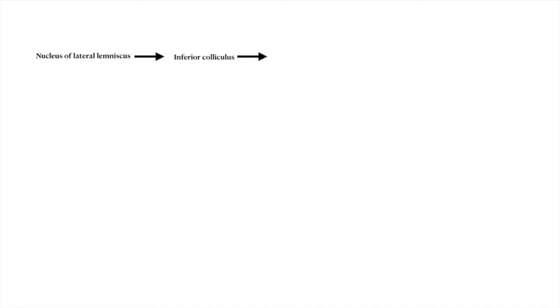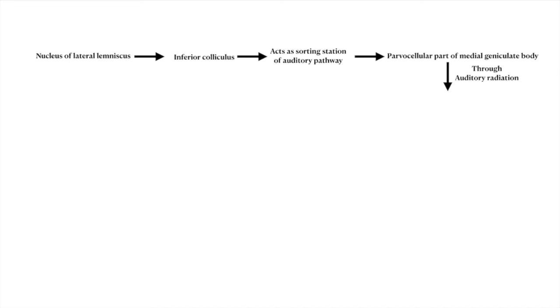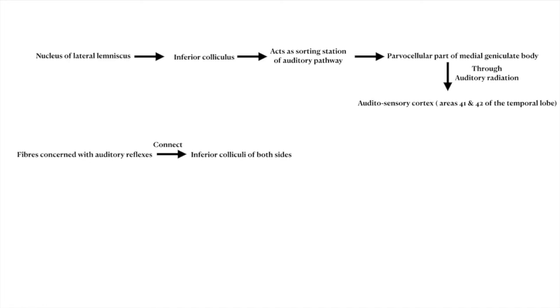The fibers concerned with hearing pass to the parvocellular part of the medial geniculate body, from where they pass through the auditory radiation and terminate into the auditory cortex, areas 41 and 42 of the temporal lobe. The fibers concerned with the auditory reflex connect the inferior colliculus of both sides by commissural fibers. Some of these fibers connect to the superior colliculus, from where you get the tectospinal and tectobulbar tracts.